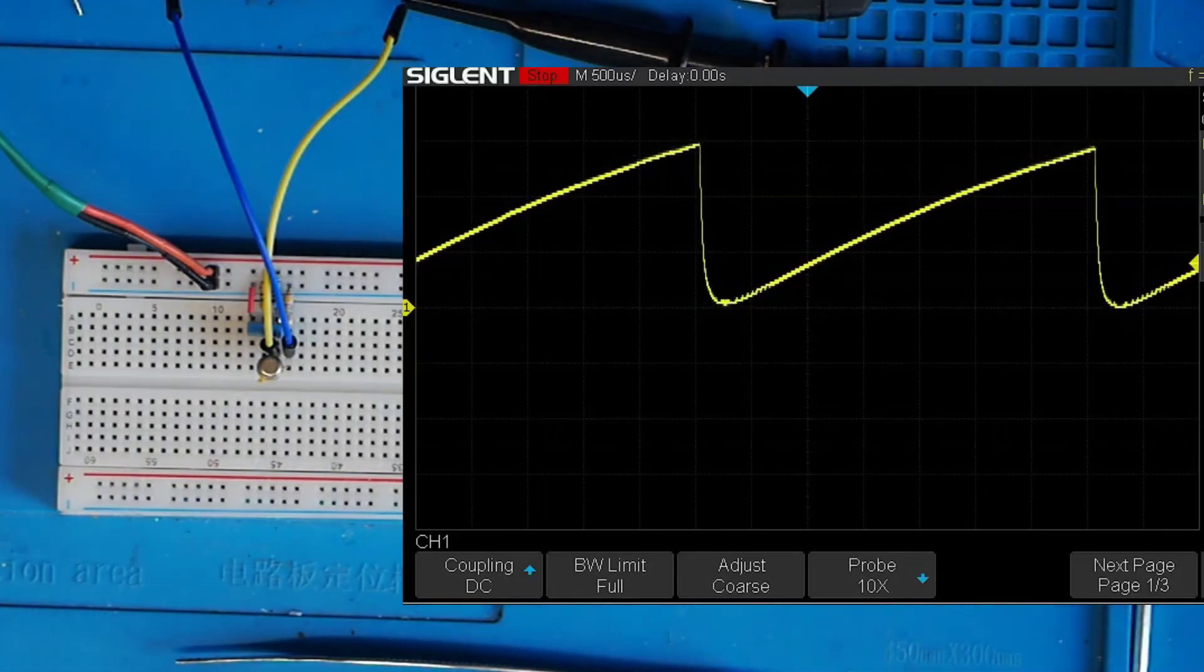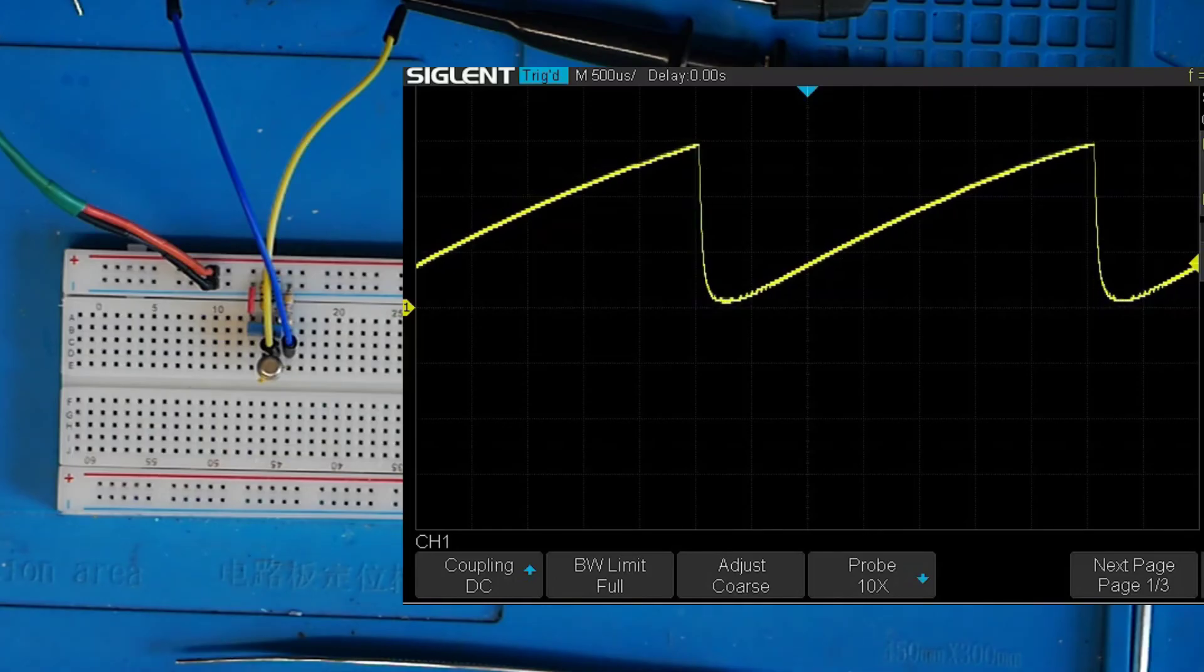That's what's happening at the emitter. You can hopefully see, I'm going to just pause it for a second. There's that gradual rising up of the ramp which is the classic indication of a capacitor charging up, and that's the 100 nanofarad capacitor charging up. Then it reaches a point where it very quickly discharges and then the charging cycle starts all over again.